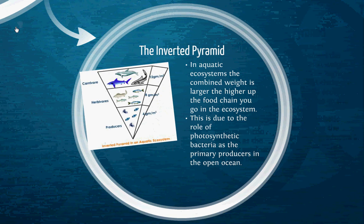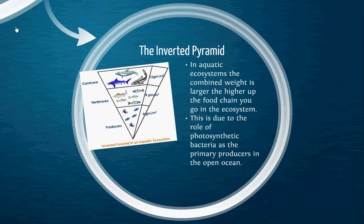But there are cases where the pyramid is inverted. In aquatic ecosystems, this is the biggest case. The producers — the little photosynthetic bacteria and other microscopic organisms that provide the producer level — are teeny tiny microscopic things. So even if there are billions of them in the water, their total weight is very tiny. The fish that eat those little microscopic organisms are much bigger. Whale sharks are the biggest fish in the world, but they survive on krill, which is tiny. So an aquatic ecosystem in the open ocean is going to have this inverted pyramid, which is kind of neat.